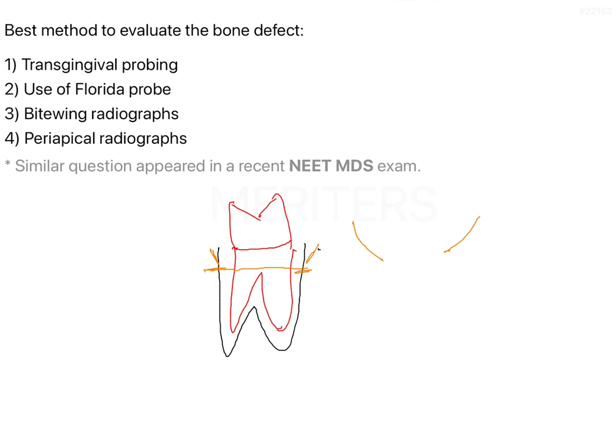When you raise a flap, you are directly probing into the area of the defect and able to identify the morphology and pattern of bone loss — whether it is vertical, horizontal, an osseous crater, a 3-wall defect, a 2-wall defect, a 1-wall defect — whatever the case, making identification much easier.